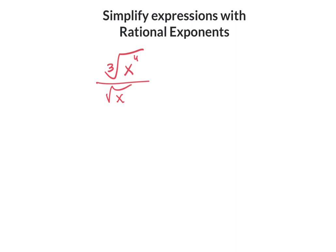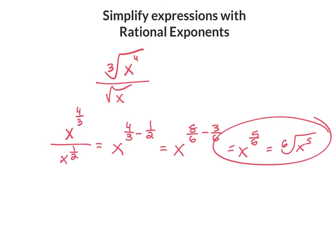For the last example, pause and try it on your own. Remember: start with roots, change them to fractions as rational exponents, then use the property. When you check your answer, the steps are converting to rational exponents, subtracting with common denominators, and writing the final answer in both rational exponent form and radical form. Good luck!